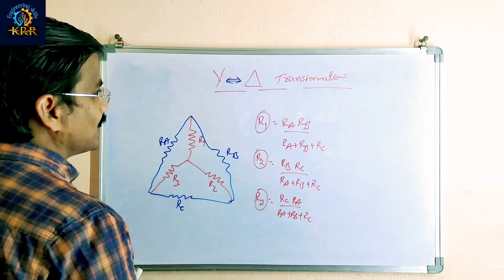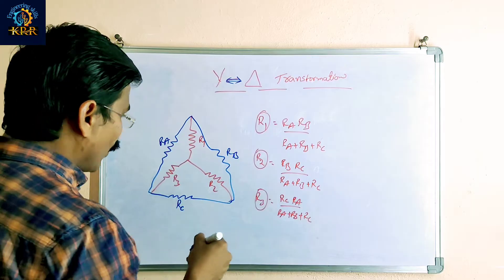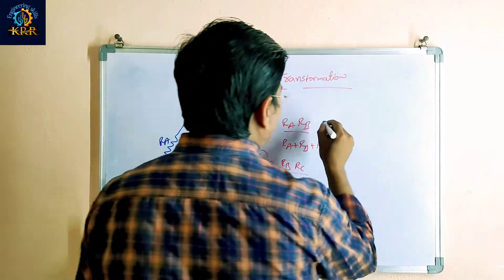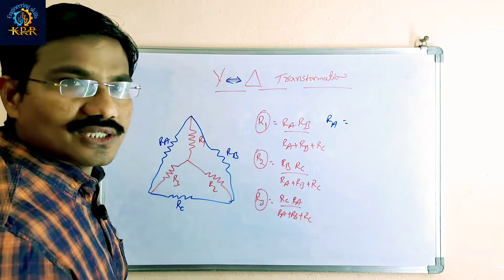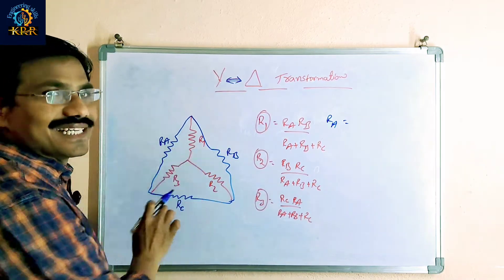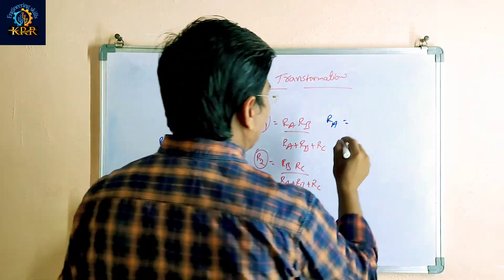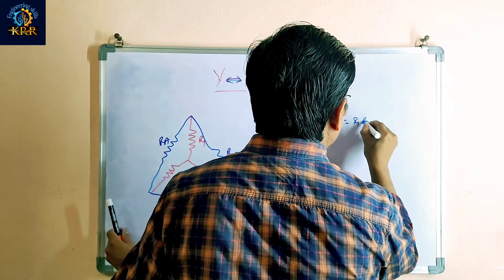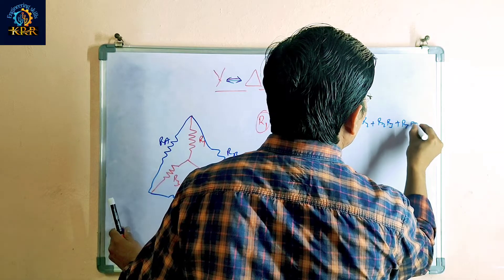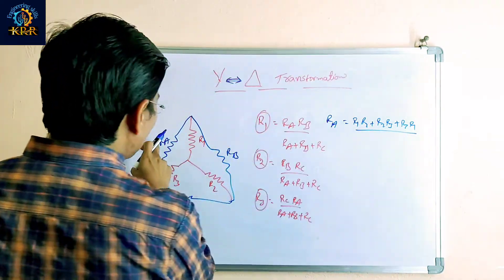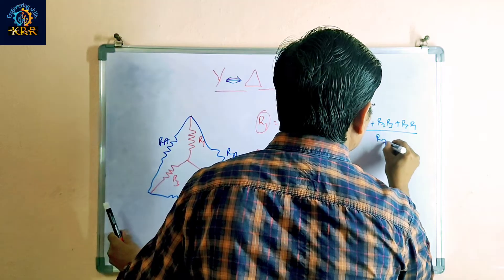Now, star values as given, how to calculate the delta value. Suppose Ra — means star values as given, how to calculate the delta. Ra is equal to R1 R2 plus R2 R3 plus R3 R1, divided by the quite opposite resistance. Ra is quite opposite R2.